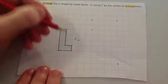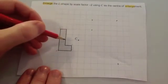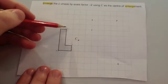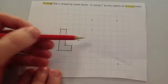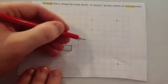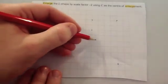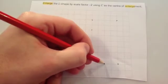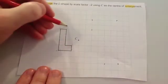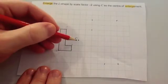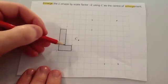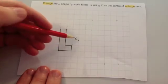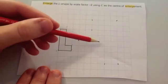Just two more points to do. This one is 2 to the left and 2 up, so instead we go 4 to the right and 4 down. And the last one is 2 to the left and 1 down, so we're going to go 4 to the right and 2 up.